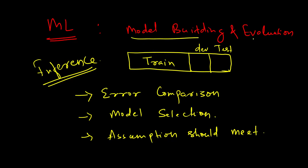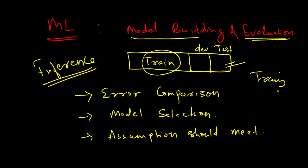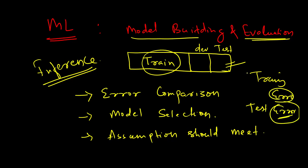Model building and evaluation happens through your dataset being split into at least two types: training data and test data. You build a model on the training data and then test your model, giving you a training error and a test error. You then compare these two errors to come up with the best model, or to find out which particular machine learning algorithm is going to fit this data.